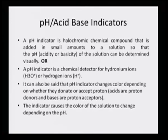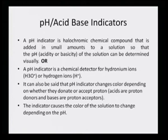A pH indicator is a halochromic chemical compound that is added in small amounts to a solution so that the pH — that is, the acidity or basicity of the solution — can be determined visually. A pH indicator is a chemical detector for hydronium ion (H₃O⁺) or hydrogen ion (H⁺).